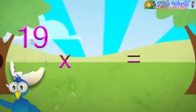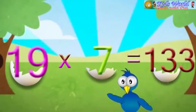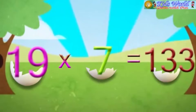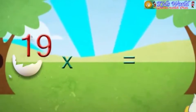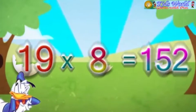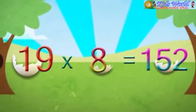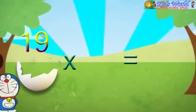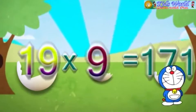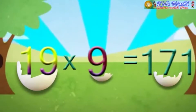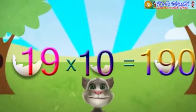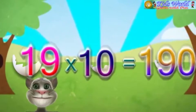19 into 7 is equal to 133. 19 into 8 is equal to 152. 19 into 9 is equal to 171. 19 into 10 is equal to 190.